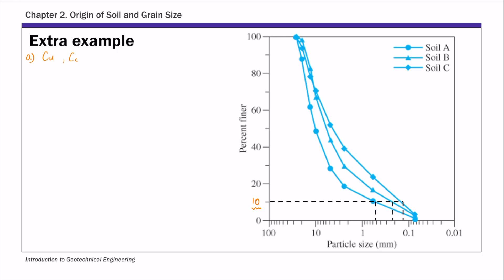For d10 values for these three soils: soil A's d10 value is approximately 0.6 mm. For soil B, its d10 value is about 0.2 mm. And soil C's d10 value is about 0.15 mm.